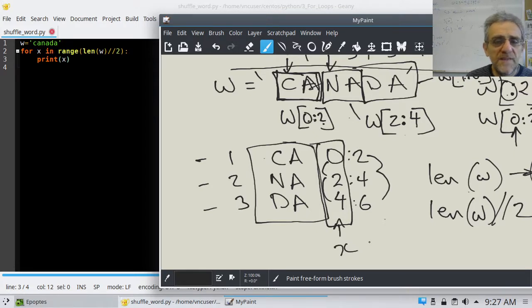Well, if we stick with len w, that's going to be six and it's going to go zero, one, two, three, four, five. That's not going to work.